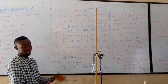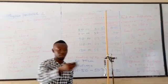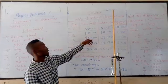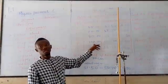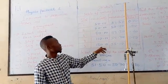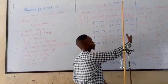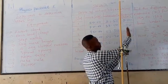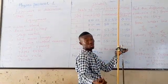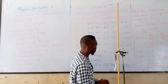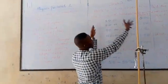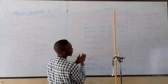You will continue like that, add an additional 20 grams to it again to give us 90 grams. You will add 20 grams to give us 110 and also 20 grams to give us 130. Record the extensions and also record the extensions of the load from the pointer. So we have tabulated our, we have gotten our tables.